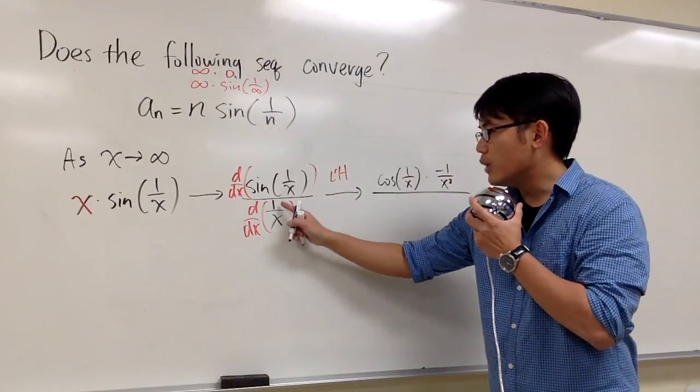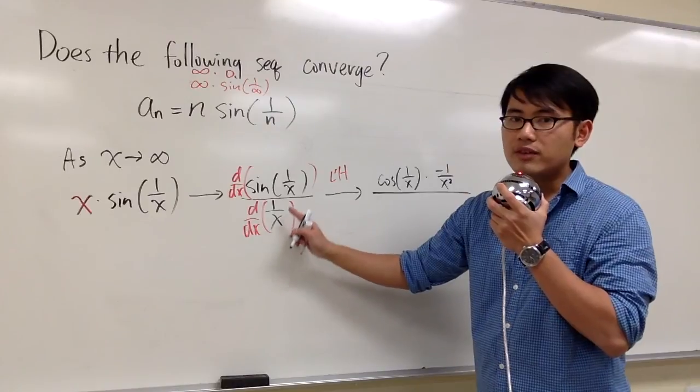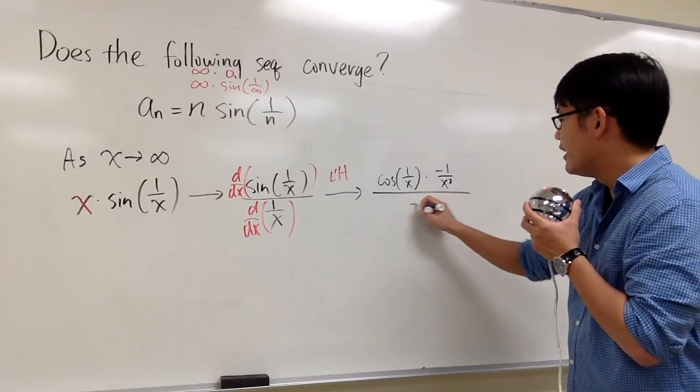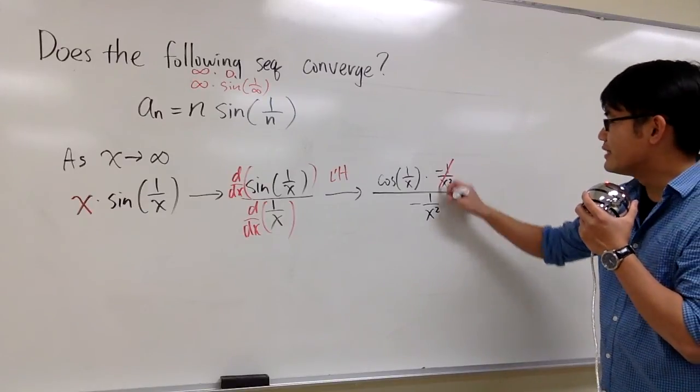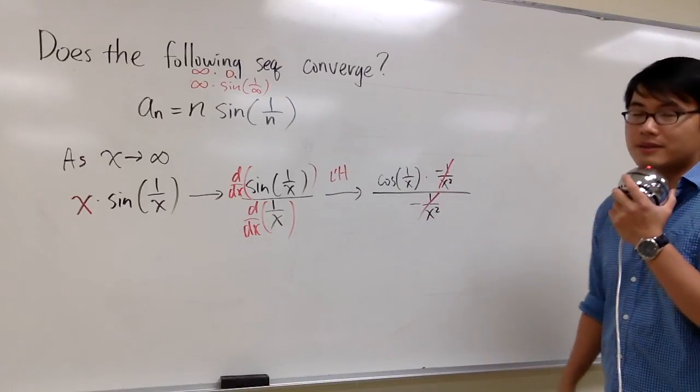On the bottom, we look at 1 over x only and then differentiate that. Derivative of 1 over x is once again negative 1 over x squared. As you can see, they cancel each other completely.